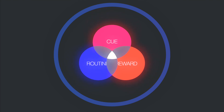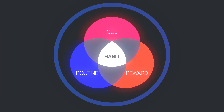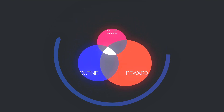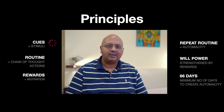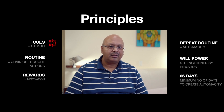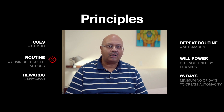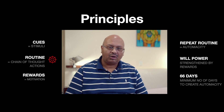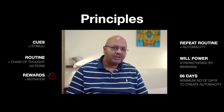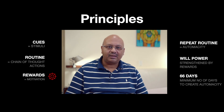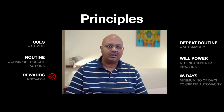If you analyze the anatomy of a habit, a habit is created through a loop: cue, routine, and reward. Cues are stimuli like sight, smell, taste, touch, sound, or thought. Routines are a chain of thought and/or actions. Rewards increase or decrease pleasant or unpleasant sensations, emotions, or thoughts.